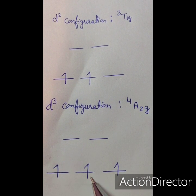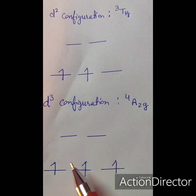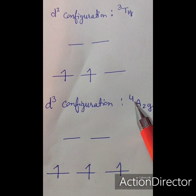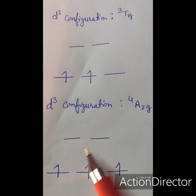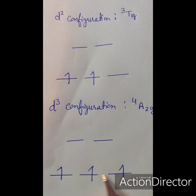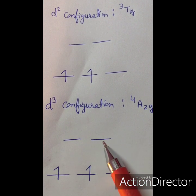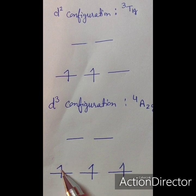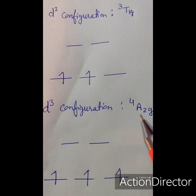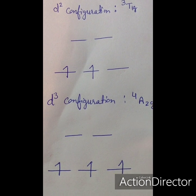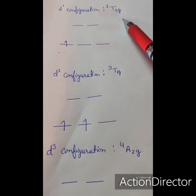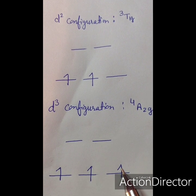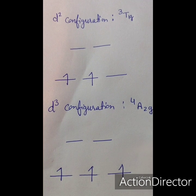For d3, the three unpaired electrons give S=3/2 and multiplicity 2S+1=4. The term is A₂g because only the t₂g set is half-filled (not the full d shell). If all d orbitals also had single electrons, it would be A₁g (totally symmetric), but since only t₂g is half-filled, it is A₂g. Key memory points: one electron in t₂g → T₂g; two electrons → T₁g; t₂g half-filled or completely filled → A₂g.